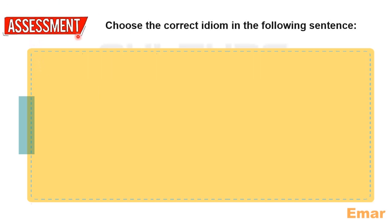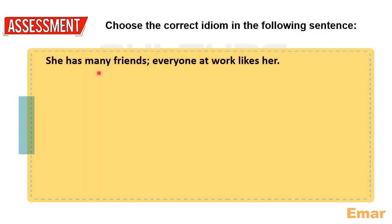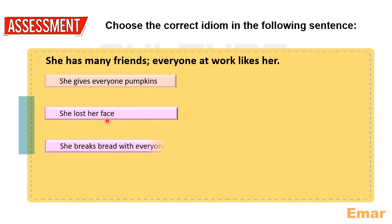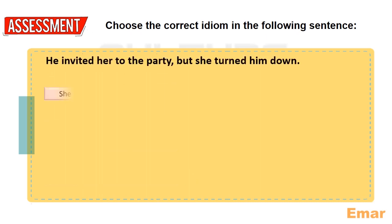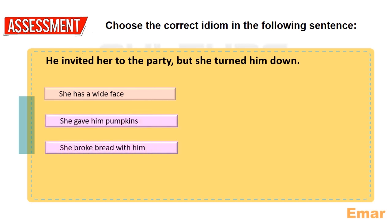Ongoing assessment: choose the correct idiom for the following situation. 'She has many friends, everyone at work likes her' — she has a white face. 'He invited her to the party but she turned him down, she said no' — she gave him pumpkins. She turned him down means she gave him pumpkins.